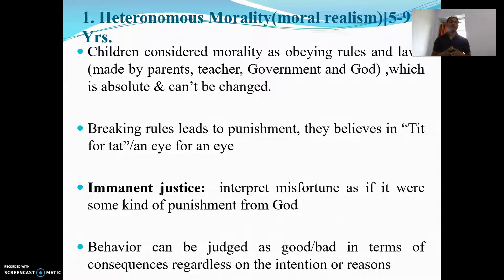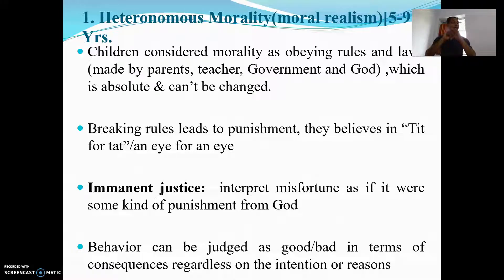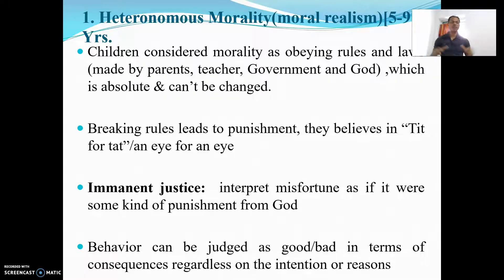Heteronomous morality, or moral realism, covers the age group of five to nine years. In this stage, children consider morality as obeying rules made by parents, God, government, or teachers, and those rules cannot in any way be changed. Breaking rules leads to punishment, and they believe in an 'eye for an eye' principle — if you do the wrong thing, you will be punished.